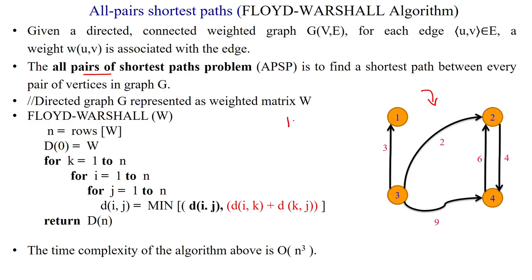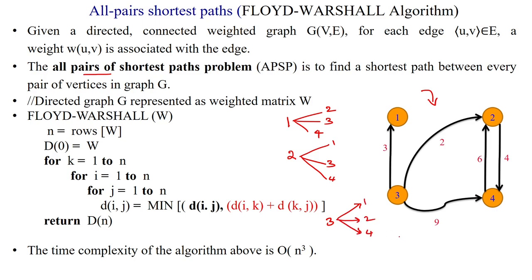For example, from vertex 1 we find distances to all other vertices: 1 to 2, 1 to 3, 1 to 4. Then taking source vertex as 2: 2 to 1, 2 to 3, 2 to 4. Then source vertex as 3: 3 to 1, 3 to 2, 3 to 4. Then vertex 4 as source: 4 to 1, 4 to 2, 4 to 3. So we find the shortest path between all pairs of vertices.